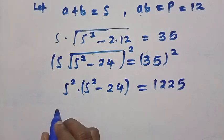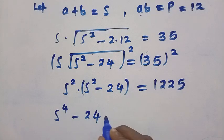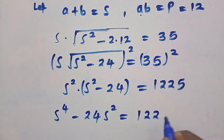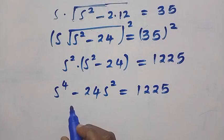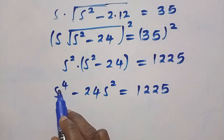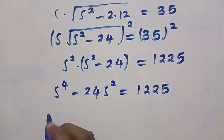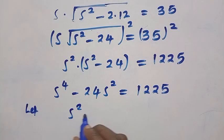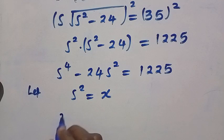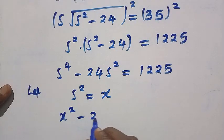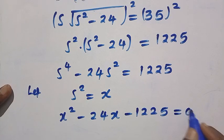When we expand this bracket, we have X raised to the power 4 minus 24X squared equals 1225. To solve for X, we substitute — let X squared equal t — so the equation becomes t squared minus 24t minus 1225 equals 0.